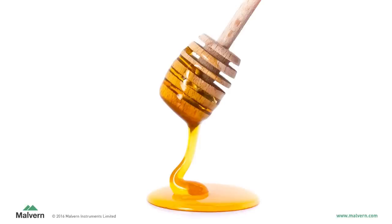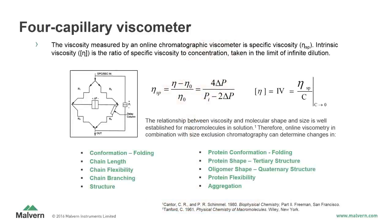The principle behind the viscometer detector is that a solution containing dissolved macromolecules will be more viscous than the solvent by itself. Comparisons of the two lead to a variety of viscosity values, including intrinsic viscosity. The 4-capillary viscometer allows the intrinsic viscosity of a sample solution to be measured directly by observing the differential pressure (DP) and the inlet pressure (IP). Those two pressure measurements allow for the specific viscosity of the sample solution to be obtained. Intrinsic viscosity is the specific viscosity of a sample solution at infinite dilution. Since the concentration of the sample solution in GPC is very low, it is close enough to zero concentration that the specific viscosity determined is essentially the intrinsic viscosity of the sample.